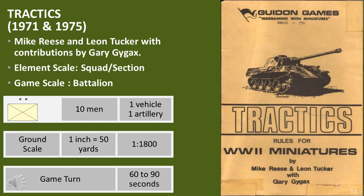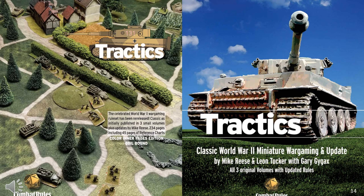Tractics was the successor to Fast Rules, developed by Mike Rees and Leon Tucker with contributions by Gary Gygax. The first edition was designed for 20mm scale figures, but by the second printing it also catered for 6mm figures. These rules were first to cater for micro-armour figures and proved very popular. They used an umpire, which was a trend beginning around this time especially in the US, though in practice it was not popular as one player was forced to be the umpire. A new reprint of these rules occurred in 2021.